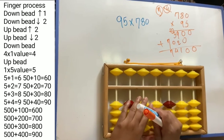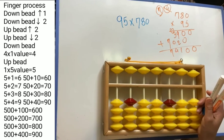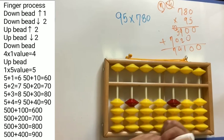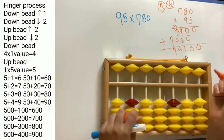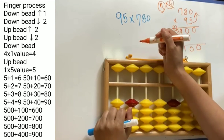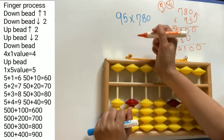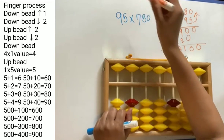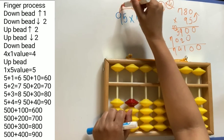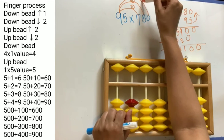Now let's do this same question on the Abacus. In normal style we start multiplying from the lowest place, but in Abacus technique we start from the biggest place. So we have to start with 9 × 7 as group 1, then 9 × 8, and 9 × 0.